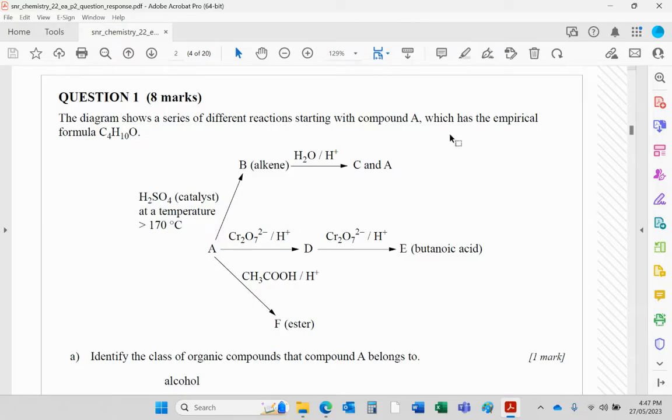Okay, we have some flowcharts. The diagram shows a series of reactions starting with compound A, empirical formula C4H10O. It helps if you realize that's an alcohol. If you see a carbon hydrogen ratio of one to two plus two, then it's single bonds only. If there was no oxygen that would be an alkane; if there's an oxygen it's an alcohol. So A is an alcohol and you will see that it oxidizes. That's an oxidizing agent, you should know that.